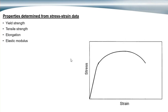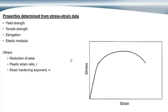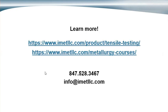That's the information people are typically interested in. You can also determine reduction of area, plastic strain ratio, and strain hardening exponent. For people involved in component fabrication, plastic strain ratio and strain hardening exponent can be important for simulating and understanding the processes. So that's the basics of tensile testing.